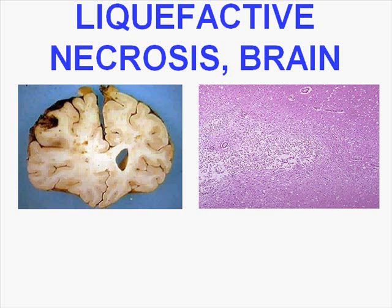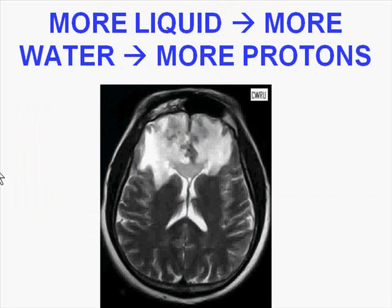So any nonspecific injury to the brain will result in, among other things, edema, increased water, increased H2O, increased proteins, increased MRI signals. Here is some bilateral frontal lobe injury resulting in fluid and therefore increased signals.